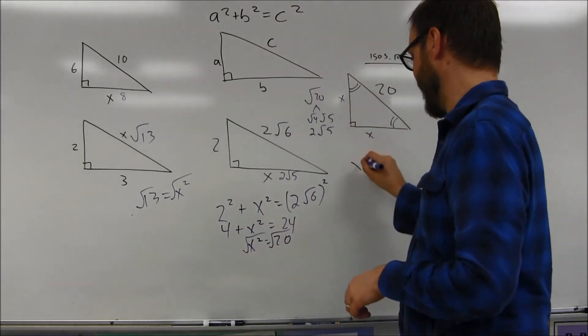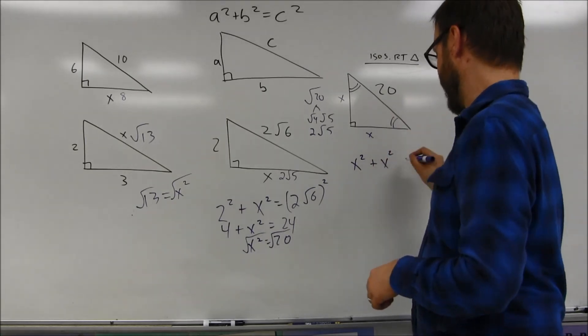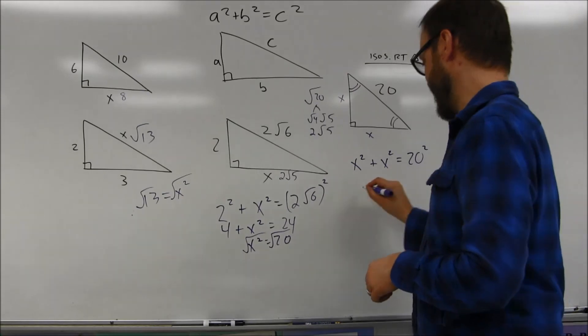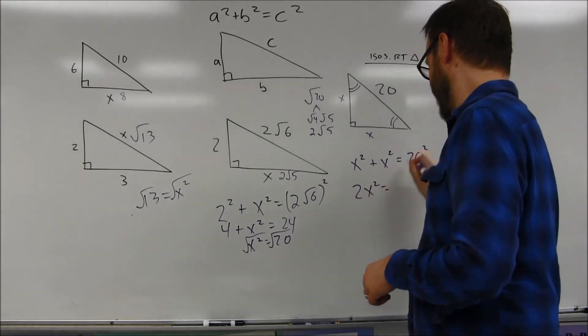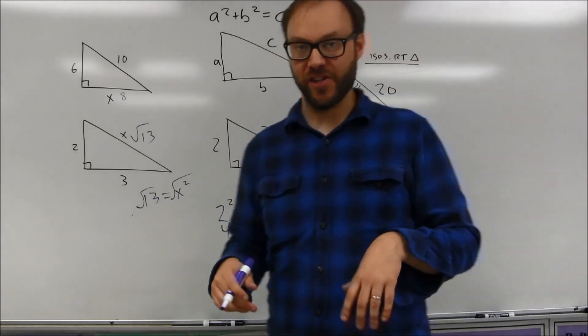So the Pythagorean theorem says take the legs squared, add the legs squared, and it's equal to the hypotenuse squared. x squared plus x squared is going to be 2x squared. 20 squared is equal to 400. You just basically solve that equation.